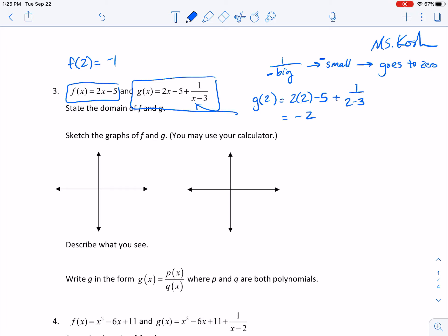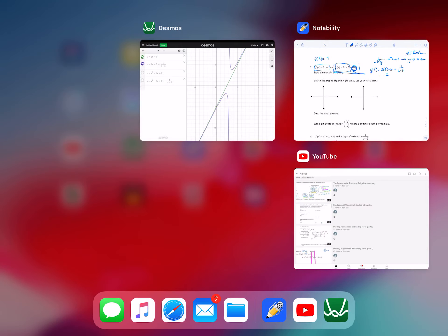So what's going to happen? Again, this term goes to 0 as x gets really, really big or really, really small. So then this graph here will look like that line. Let me see if this will make sense to you.